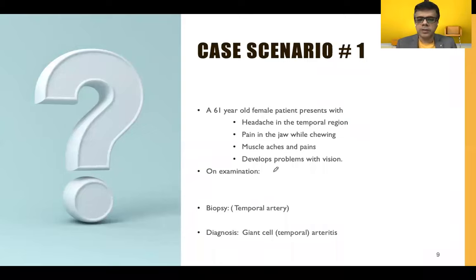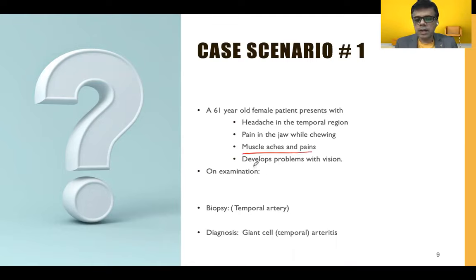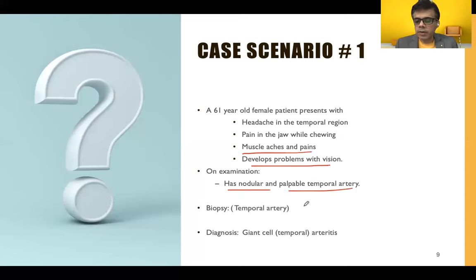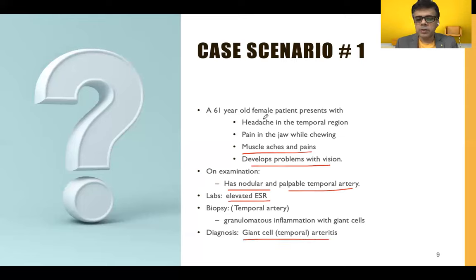A 61-year-old female presenting with headache in the temporal region, jaw pain while chewing, muscle aches and pains, and developing problems with vision. On examination, she has a nodular and palpable temporal artery. Biopsy of the temporal artery revealed granulomatous inflammation with giant cells, and lab findings showed elevated ESR. The diagnosis conferred was giant cell arteritis.